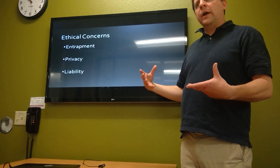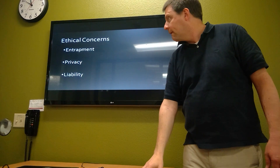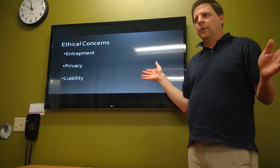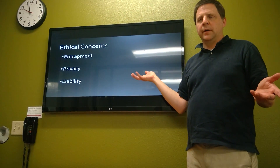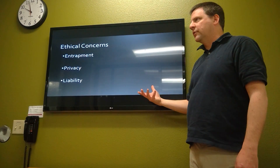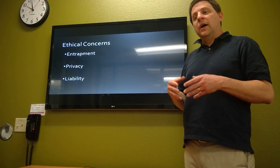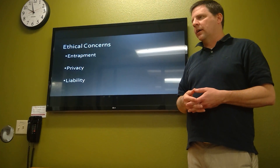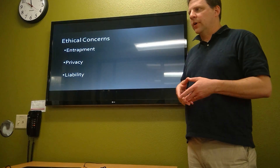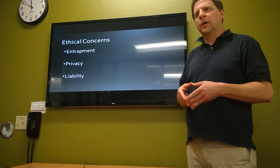Ethical concerns are where the gray area of honeypot use comes in. They look at three basic ones: entrapment, privacy, and liability. With entrapment, someone may say they did not realize it was a site they were not supposed to go to and that they were trapped. With privacy, the person who attacked the honeypot did not give permission to collect that information. Liability means a honeypot can be broken and used to attack other systems. There was actually a court case in the last year where the owner of a honeypot was found liable for distributing child pornography after an attacker cracked the honeypot and distributed it through the system.